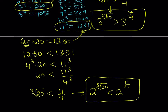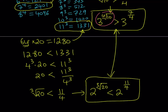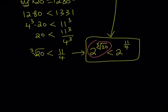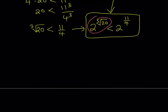Now I have two inequalities. The question is how to put these together. I need to compare 3 to the power 4th root of 10 and 2 to the power cube root of 20. That means I need to find the relationship between powers of 2 and powers of 3 — that is my next step.